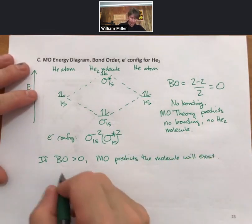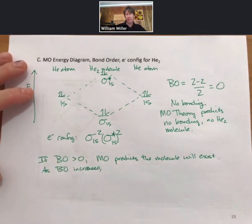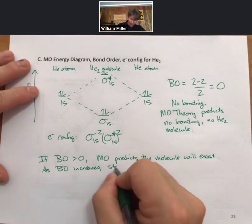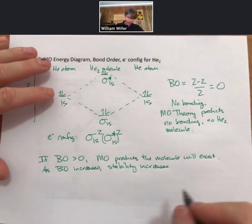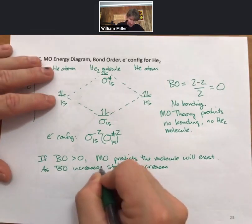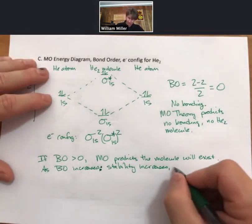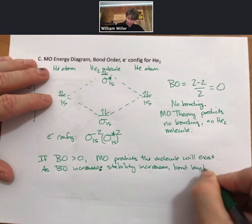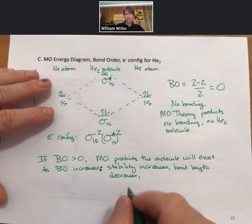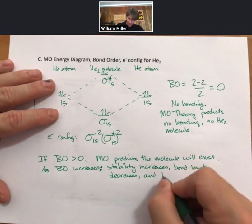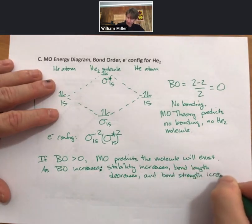If the bond order is greater than zero, then molecular orbital theory predicts the molecule will exist. Also, as bond order increases, stability increases, bond length decreases, and bond strength increases.